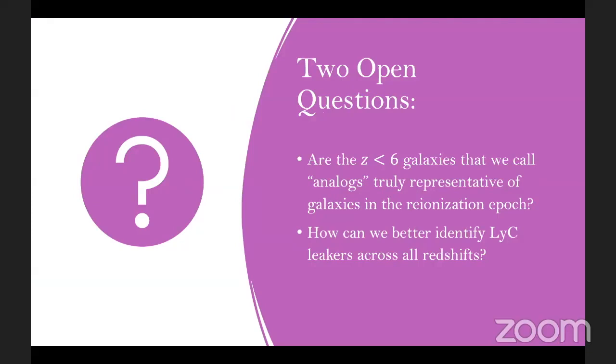There are two main questions I'd like to address with this talk. As you've heard a number of times, studying galaxies directly in the epoch of reionization is incredibly difficult for a number of reasons. So a lot of us focus on what we call analogs at redshifts less than six. But one of the open questions about these types of systems is whether or not these analogs are actually truly representative of galaxies in the epoch of reionization.